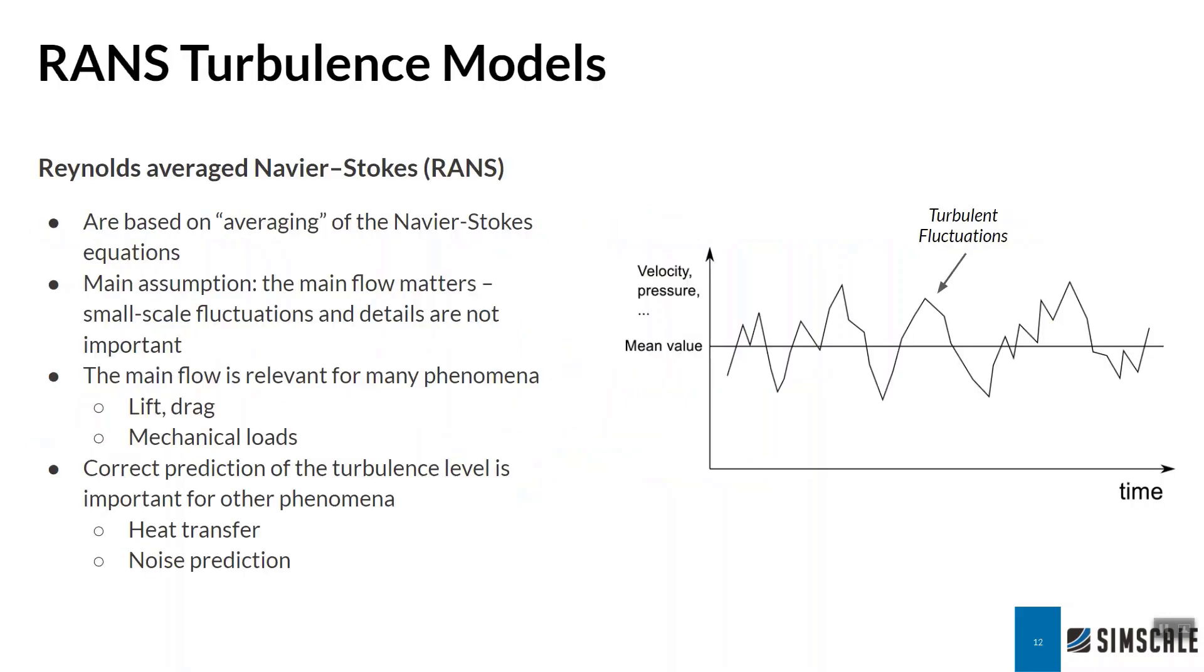The Reynolds Averaged Navier-Stokes is typically the industry standard, and it is based on averaging the Navier-Stokes equations. The main assumption that occurs is that all the flow parameters, the velocity, the pressure, is centered around some mean value, and then we have turbulent fluctuations around it, which either throw it up or throw it down. For most important phenomena like lift and drag, typically only the mean value is of interest, because the overall effect is smoothed out over time.